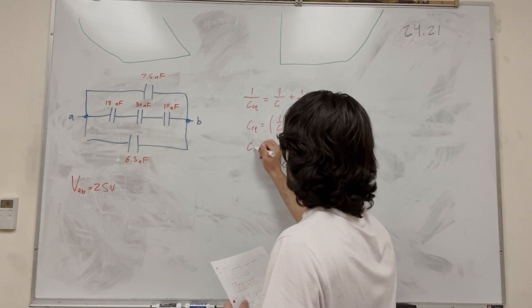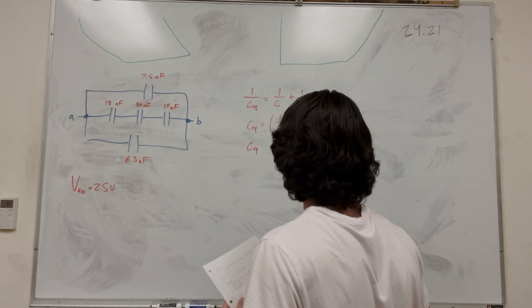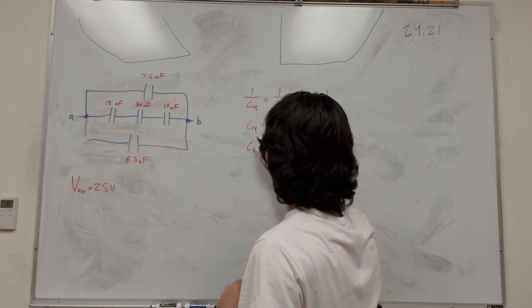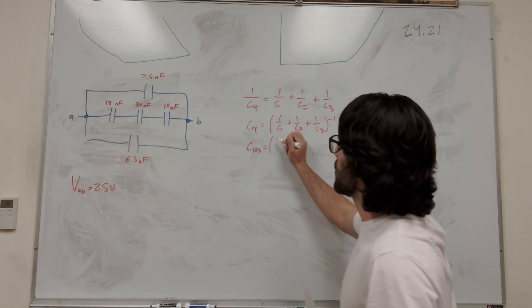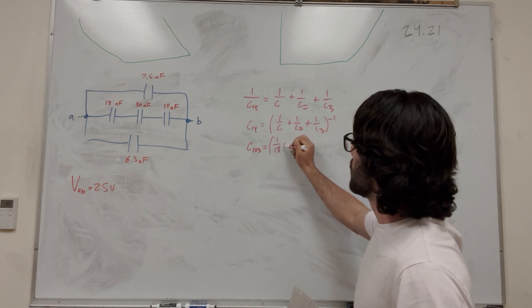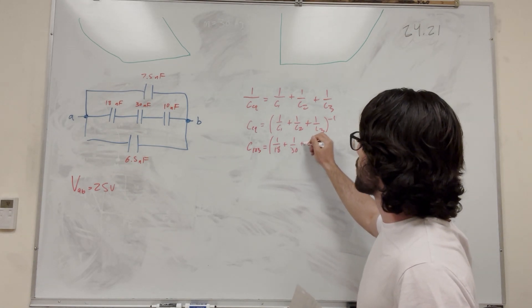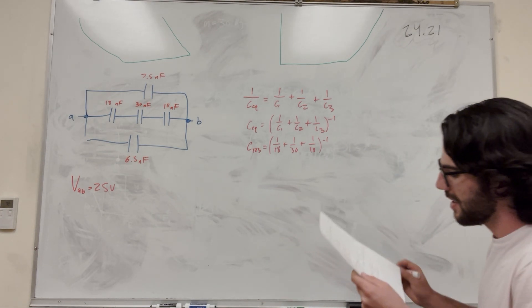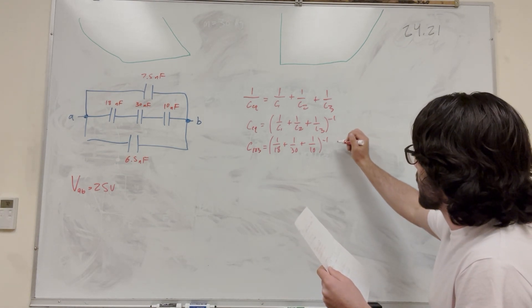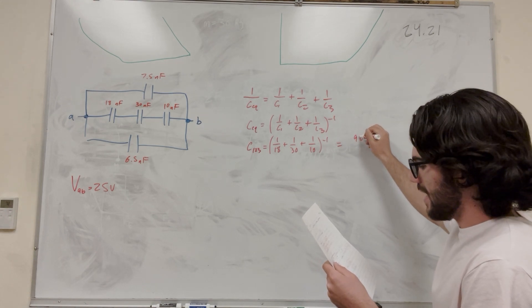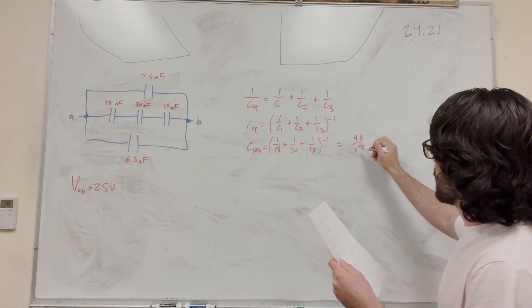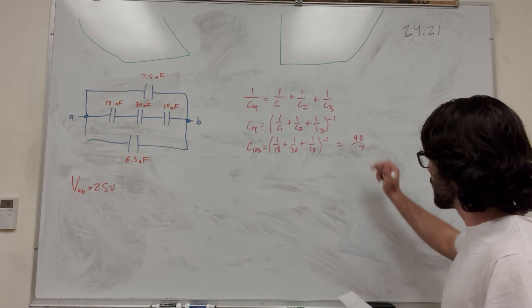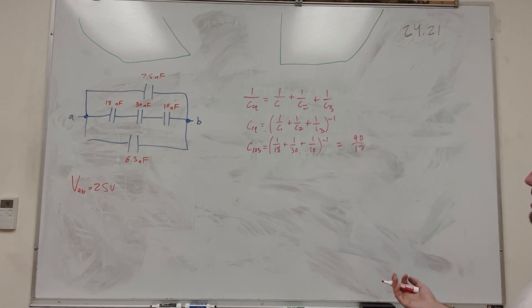So C equivalent, okay, let's label this 1, 2, 3. We're going to label this 18, 30, so 1, 2, 3 is equal to 1 over 18 plus 1 over 30 plus 1 over 10 to negative 1. So then you plug this into your calculator, and you get that this is equal to 90 over 17. Over 17. I hope you can read that. Cool. So 90 over 17.